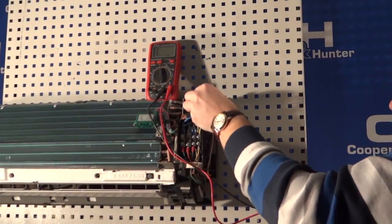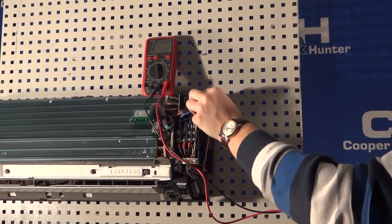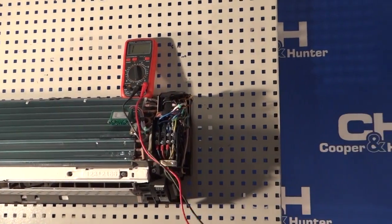If the sensors are in working order but still there is an error code, it is necessary to replace the main board of the indoor unit.